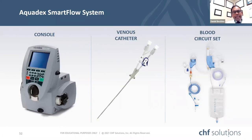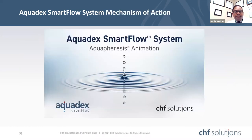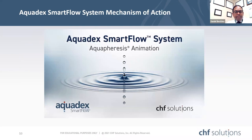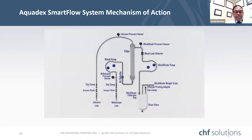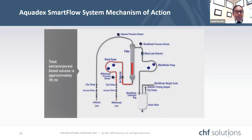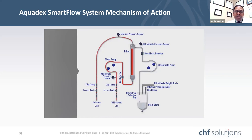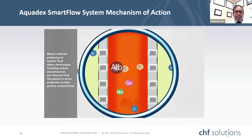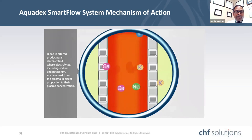The Aquadex console, venous catheter, and tubing are very simple to use, as demonstrated in this animation. The system has two pumps — the blood pump and the ultrafiltration pump — with a filter shown in red. Blood comes in from the venous side into the filter, ultrafiltrate is collected, and only sodium and water are removed as isotonic serum is extracted from the system.